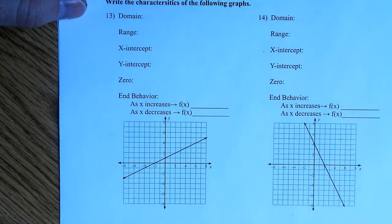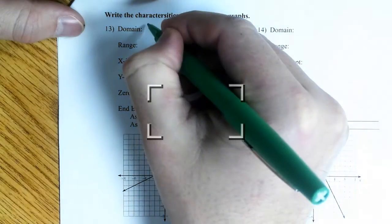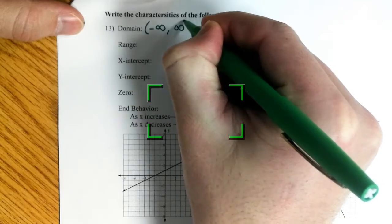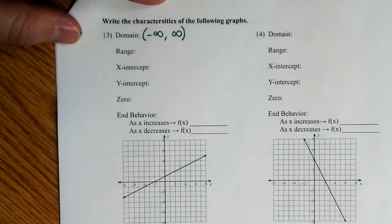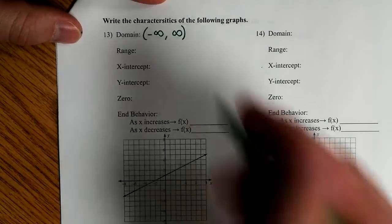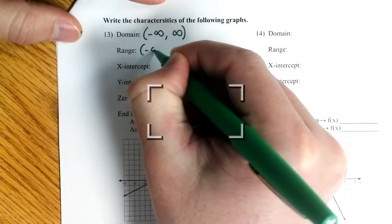Yeah, negative infinity, positive infinity. So the domain, negative infinity, positive infinity. The range, how far down does the graph go, how far up does it go? Same idea. Negative infinity, positive infinity.